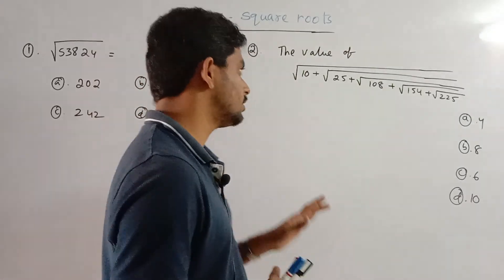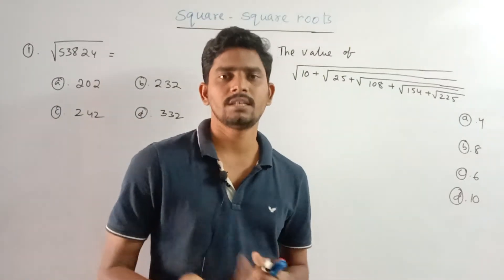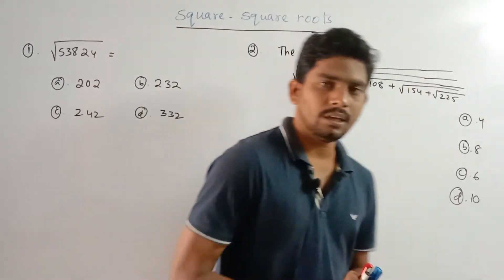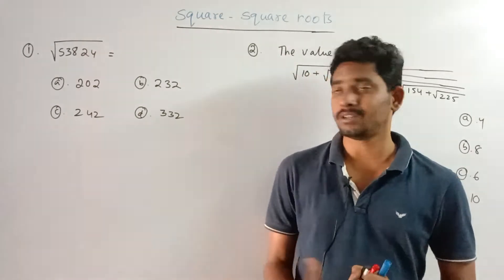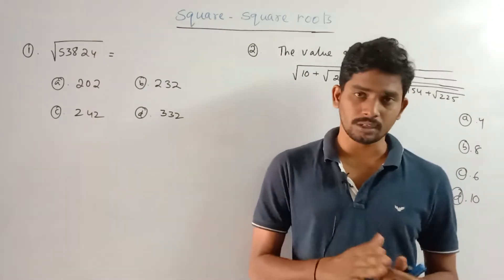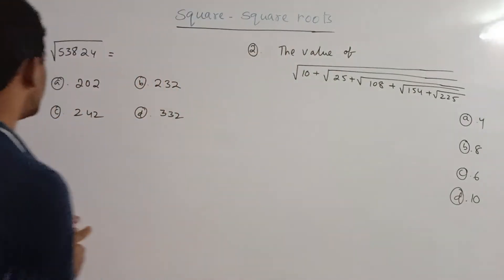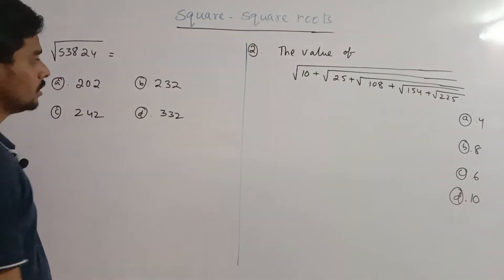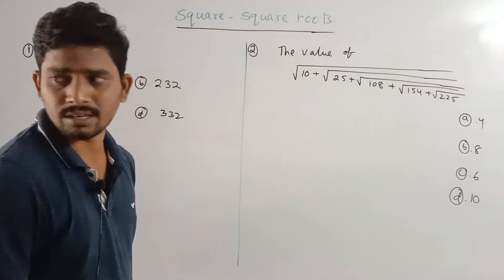The next video is about square roots. I'm going to talk about a book and materials, and work through the first sum. The square root of 53824 — I'll find the square root using three methods: the factorization method and the odd number subtraction method.